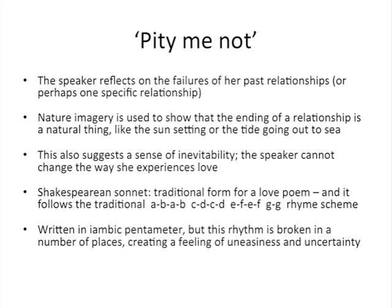In this poem the speaker reflects on the failures of her past relationships, or perhaps just one specific relationship. Throughout the poem, nature imagery is used to show that the ending of a relationship is a natural thing, like the sun setting or the tide going out to sea, and that also suggests a sense of inevitability. So the speaker admits that she can't change the way she experiences love — she knows that her relationships will come to an end just like all of these things in the natural world do.